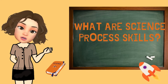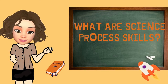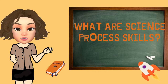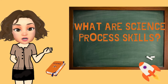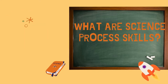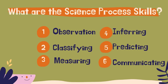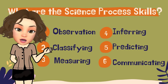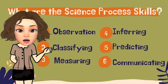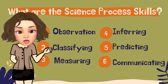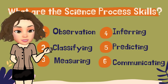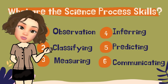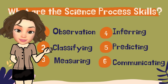As a student, it would also help you understand things around you. What are the science process skills? We have, first, observation; second, classifying; third, measuring; fourth, inferring; fifth, predicting; and sixth, communicating.